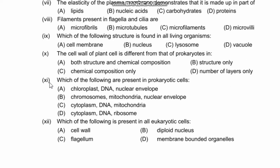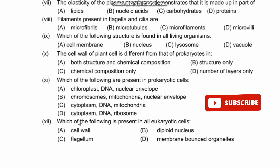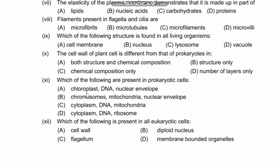Question 11: Which of the following are present in prokaryotic cells? Options involve chloroplast, DNA, nuclear envelope, mitochondria, cytoplasm, DNA, and ribosomes. Prokaryotic cells have no membrane-bound organelles. Options A, B, and C include chloroplast, mitochondria — these are membrane-bound organelles not found in prokaryotic cells. So our right option is D — cytoplasm, DNA, and ribosomes.